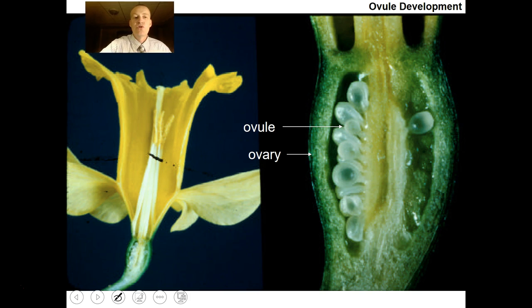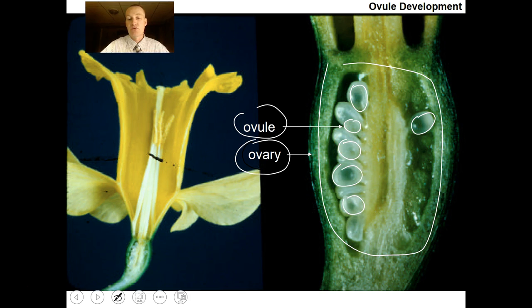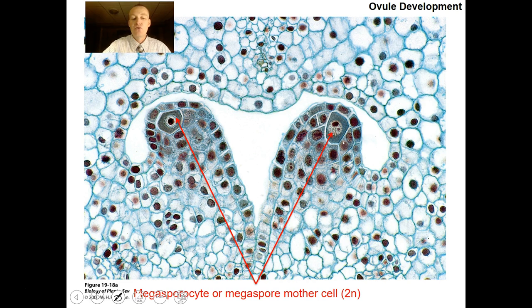This is showing you ovule development. The ovary contains the ovules — each of these little circular structures. Inside the ovules is where you have your megaspore mother cells. If we cut into an ovule, we find that the megaspore mother cells are diploid, so we have to undergo meiosis to produce haploid megaspores.